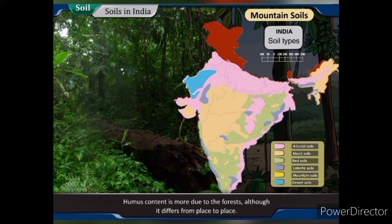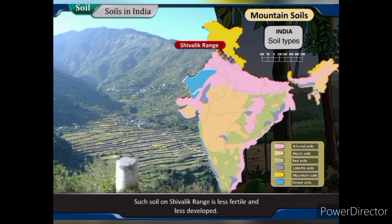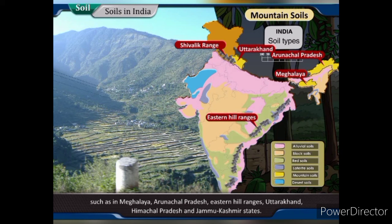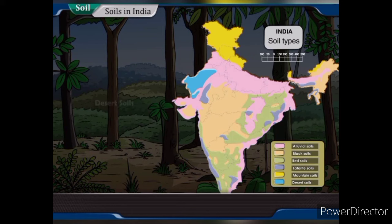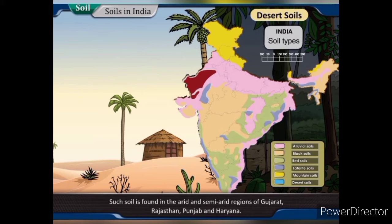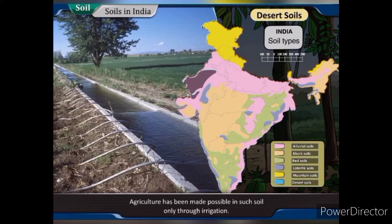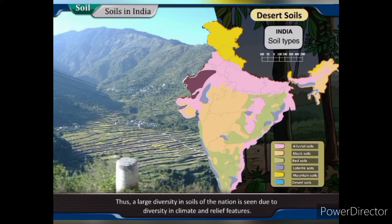Mountain soils have more humus content due to forests, although it differs from place to place. Such soil on the Shivalik range is less fertile and less developed — sandy and porous without much humus. Mountain soil is found in Meghalaya, Arunachal Pradesh, Eastern Hill Ranges, Uttarakhand, Himachal Pradesh and Jammu & Kashmir. Desert soil is found in the arid and semi-arid regions of Gujarat, Rajasthan, Punjab and Haryana. The soil here is more alkaline and has less humus content. Agriculture has been made possible in such soil only through irrigation.